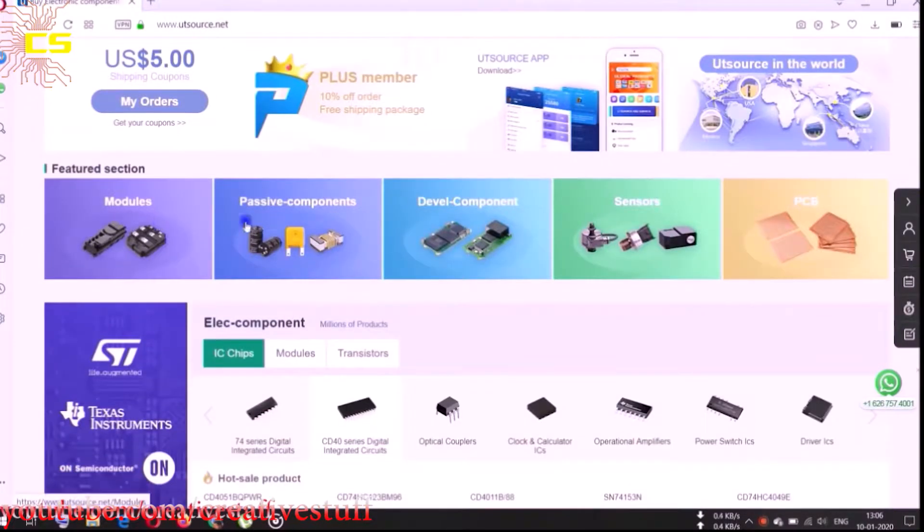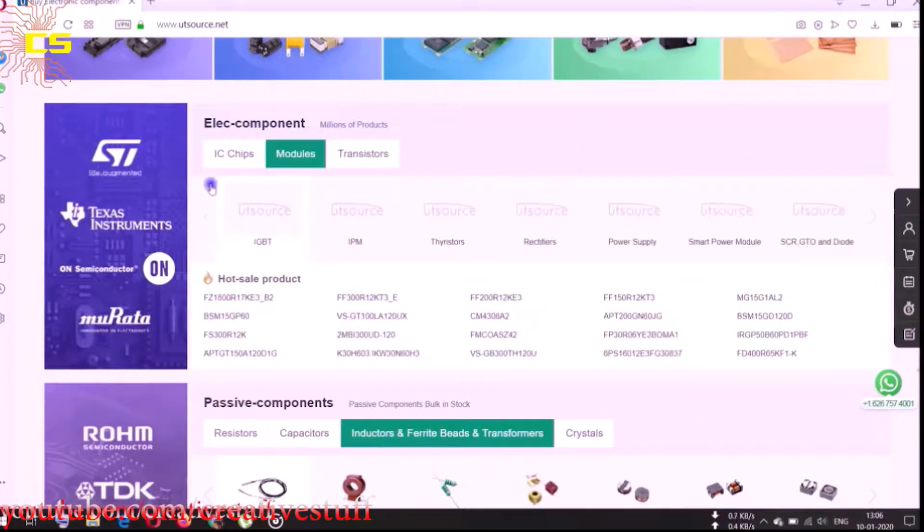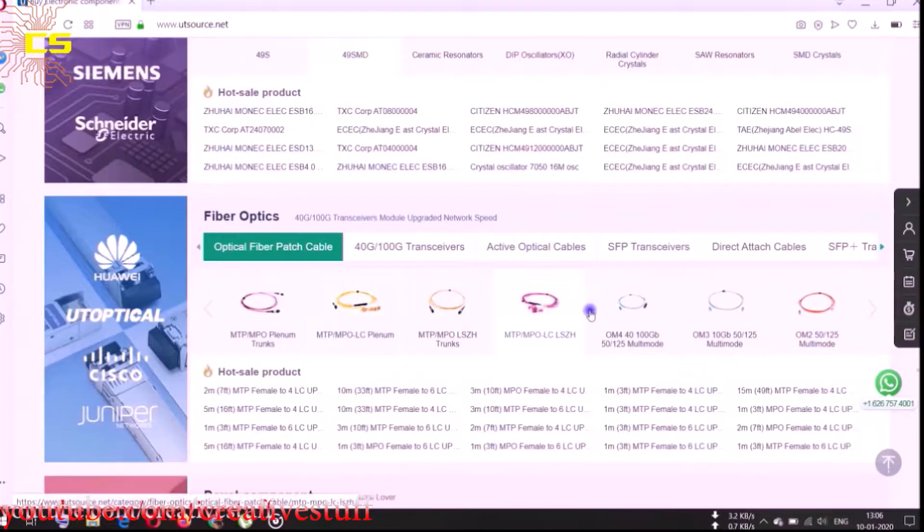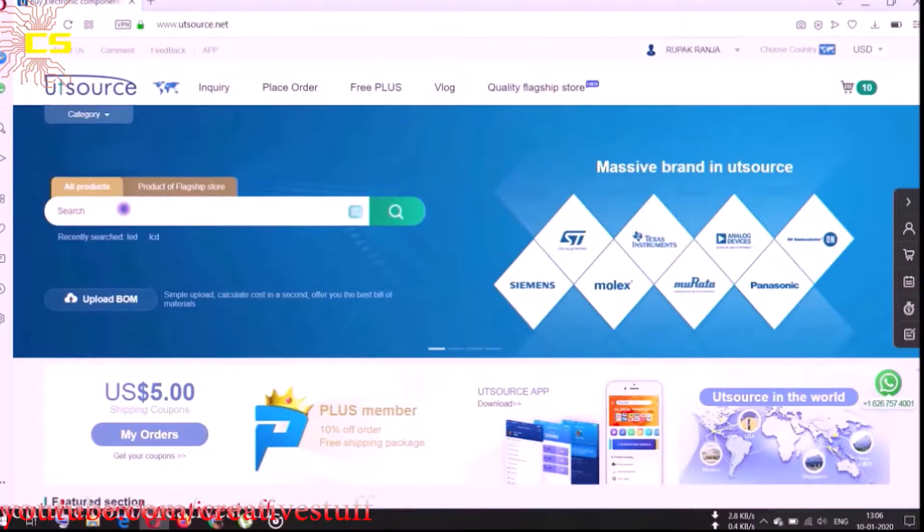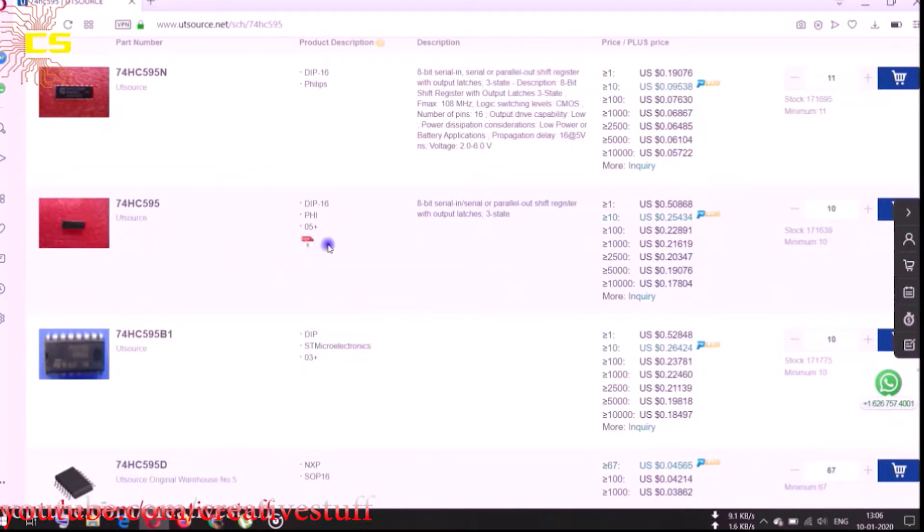This video is sponsored by utsource.net where you can find your desired electronic components at various cheap prices. utsource.net has all kinds of electronic components from resistors to modules - everything can be found here. You can search components by category or just search from the search bar. The website also provides datasheets of the components which is really helpful.